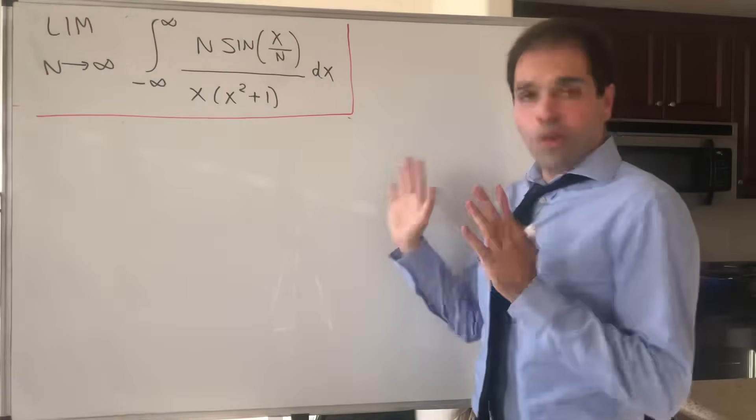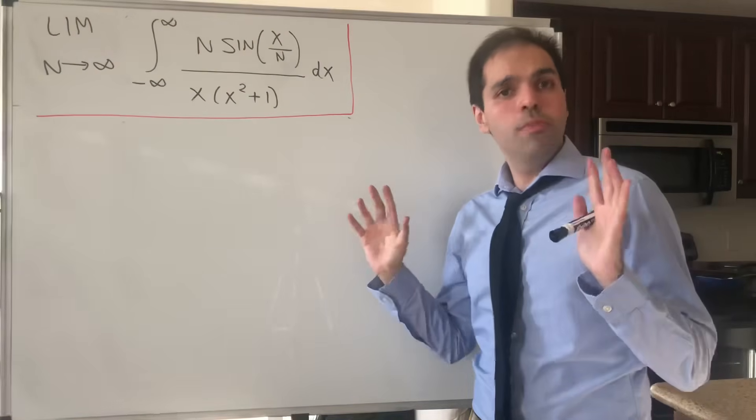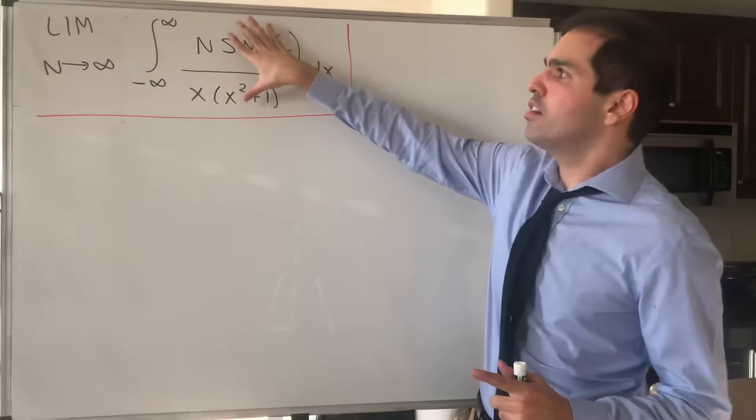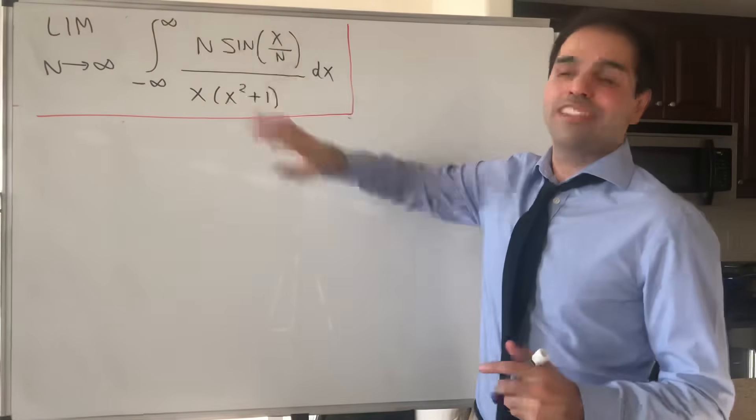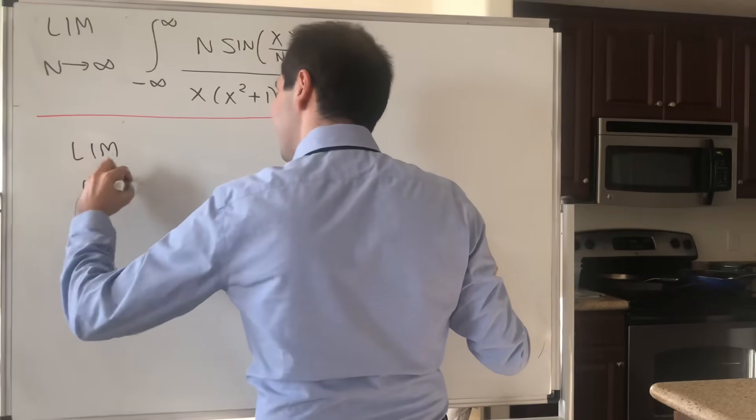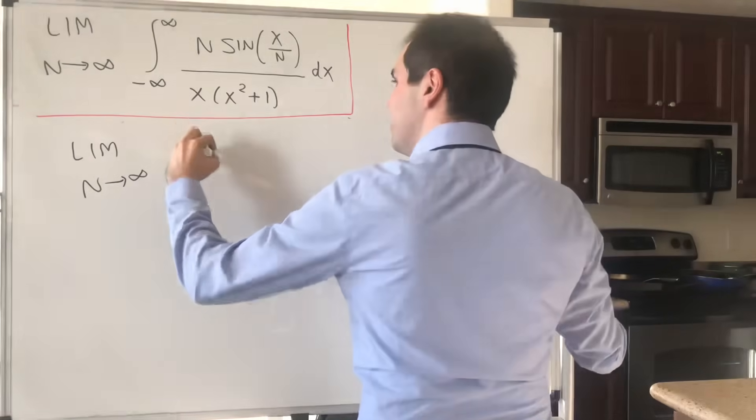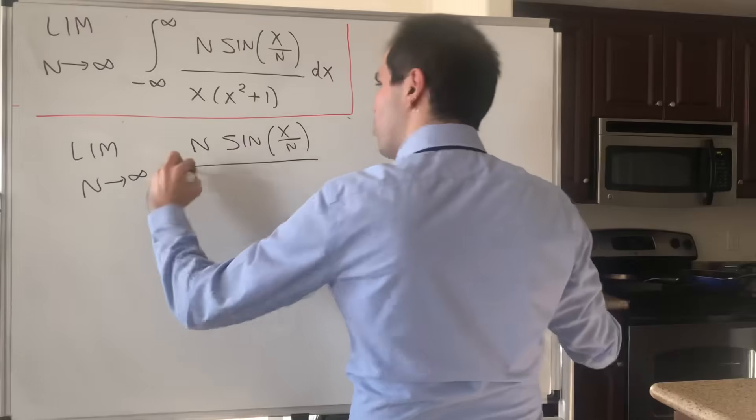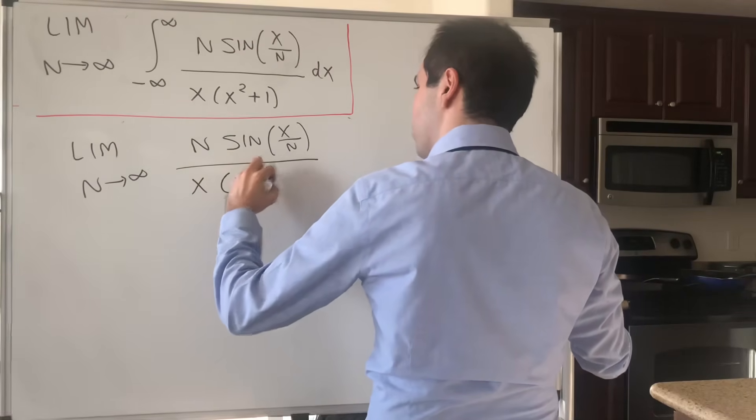And in order to do this, and it will be clear very soon, let's first calculate the limit of this inside function as n goes to infinity. So let's calculate limit as n goes to infinity of n sine of x over n over x times x squared plus 1.